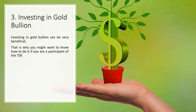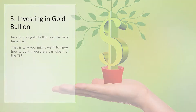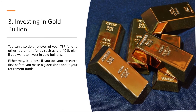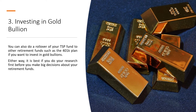3. Investing in gold bullion. Investing in gold bullion can be very beneficial. That is why you might want to know how to do it if you are a participant of the TSP. You can invest in many different types of gold after you rollover your TSP to other retirement funds such as the IRA. However, if you want to invest in gold bullions, you need the help of a self-directed gold IRA. You can also do a rollover of your TSP fund to other retirement funds such as the 401k plan if you want to invest in gold bullions. Either way, it is best if you do your research first before you make big decisions about your retirement funds.